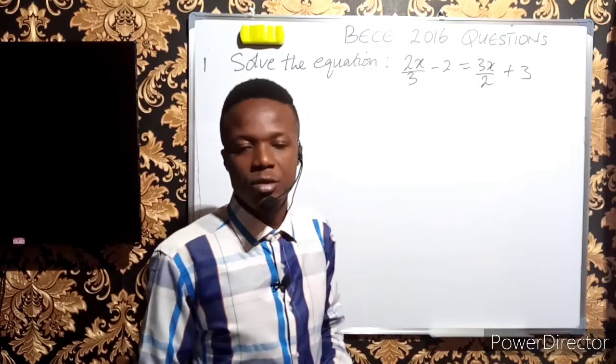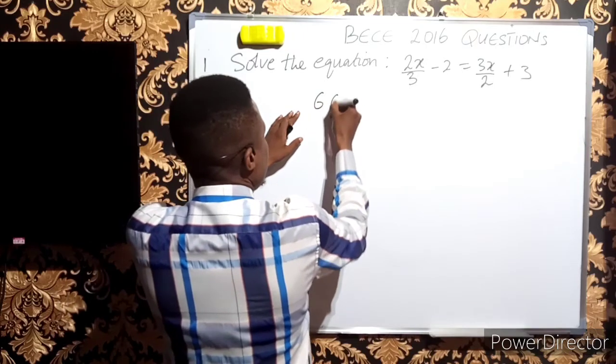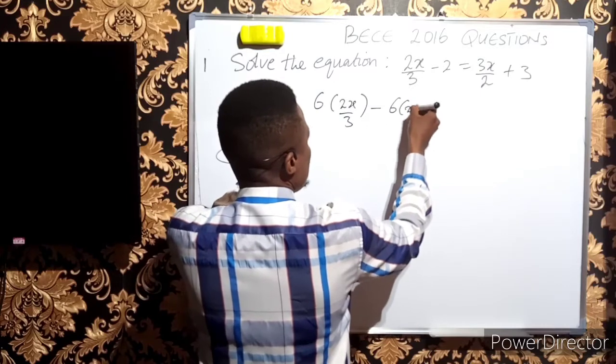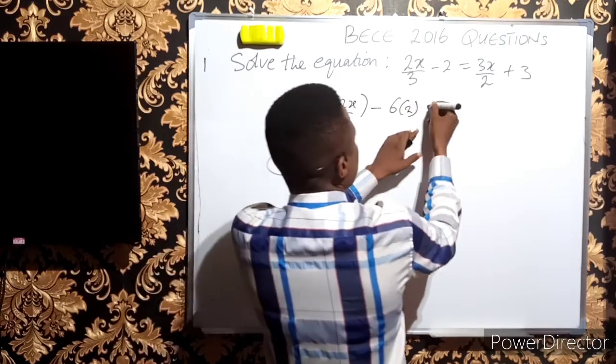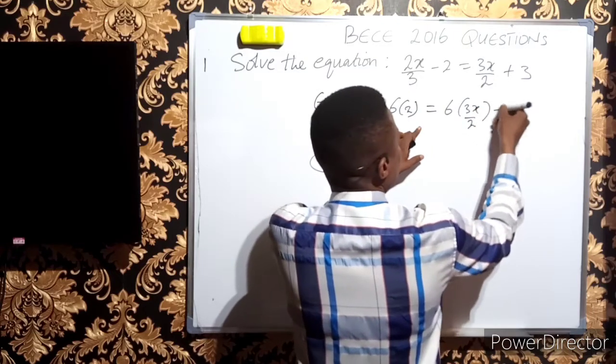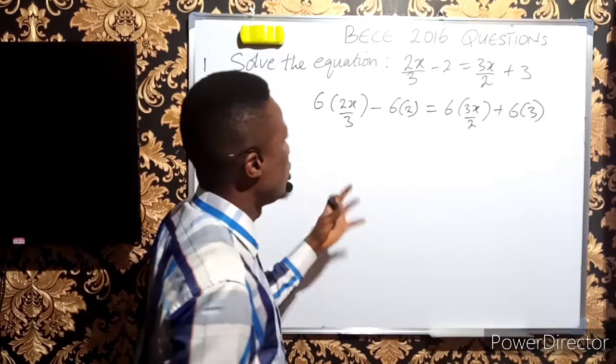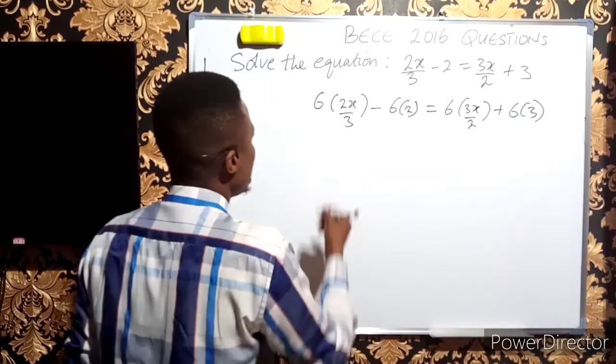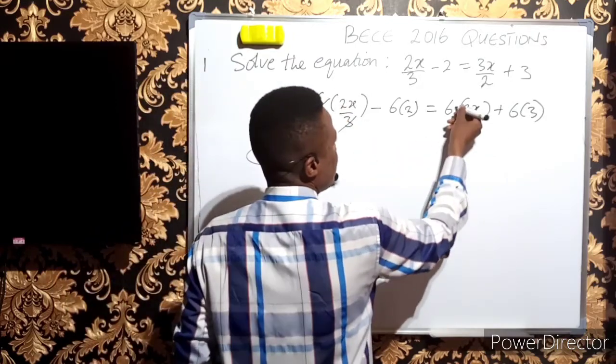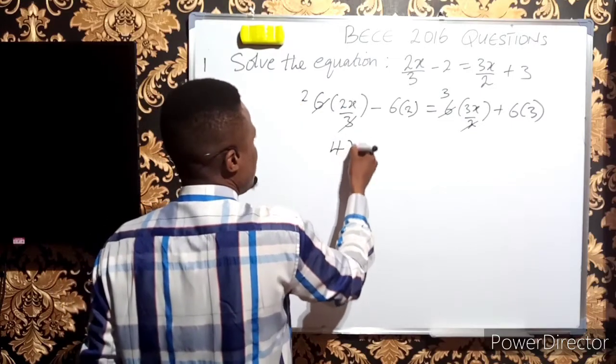We multiply everything by 6: 6(2x/3) - 6(2) = 6(3x/2) + 6(3). The 6 and 3 divide giving us 2, and 6 and 2 divide giving us 3. So we have 2 × 2x = 4x minus 6 × 2 = 12, equals 3 × 3x = 9x plus 6 × 3 = 18.